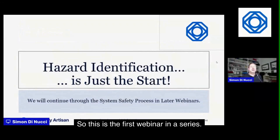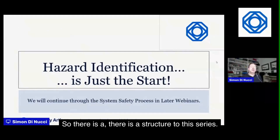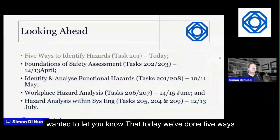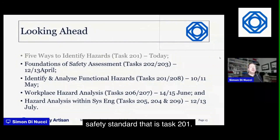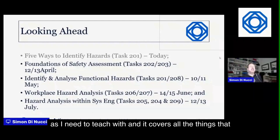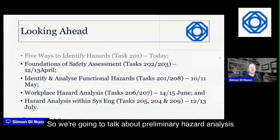This is the first webinar in a series that will continue through the system safety process. Today's session covered five ways to identify hazards — corresponding to Task 201 in MIL-STD-882E. Next month in mid-April, we'll be talking about foundations of safety assessment: preliminary hazard analysis and system requirements hazard analysis.